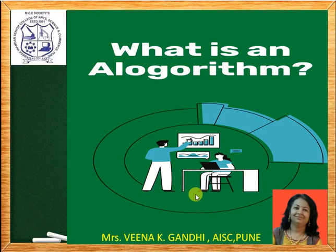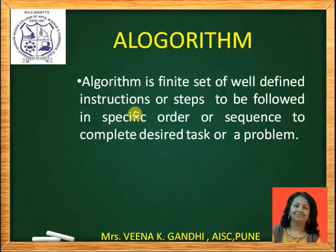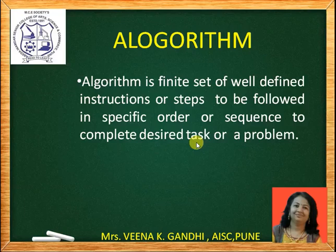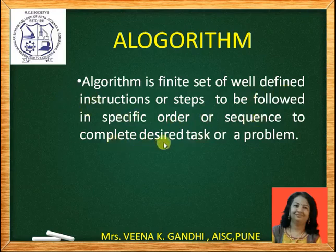Algorithm means certain steps to solve any real-world problem. Now we will see the proper definition of an algorithm. Algorithm is a finite set of well-defined instructions or steps to be followed in a specific order or sequence to complete the desired task or problem. The steps should be finite and every step should be well-defined and meaningful. If we follow those steps in some specific order or sequence, it will give the desired solution.